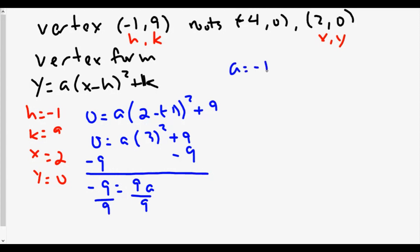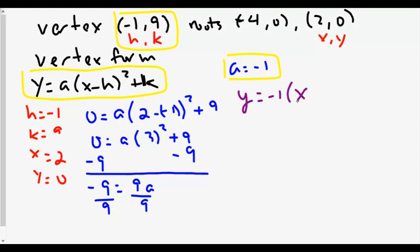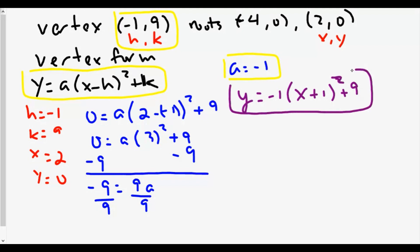So A equals negative one. Now that we have A equals negative one, we plug back into the vertex form equation with the A value of negative one and our H and K values from the vertex negative one comma nine. Our equation will be Y equals negative one times the quantity X minus negative one squared plus nine — or Y equals negative one times the quantity X plus one squared plus nine. That is the equation for our parabola.